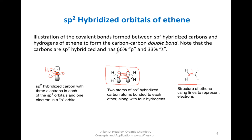So instead of drawing the molecule the old way, we draw it where the carbon's sp2 hybridized orbitals are bonded to hydrogen, another hydrogen, and to another carbon, and the pi bond is made from the two electrons on the adjacent p orbitals. The percent mixing is 66% p and 33% s. This means sp2 has more s character than sp3, which had 25% s. This will become important when we look at bond length and reactivities.